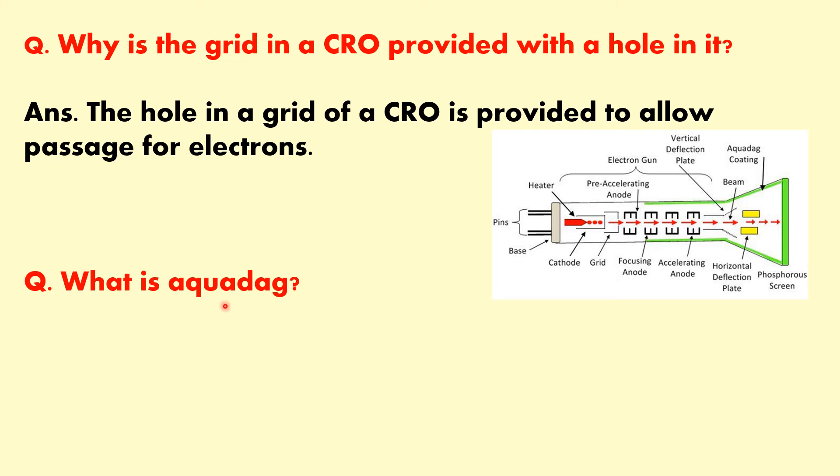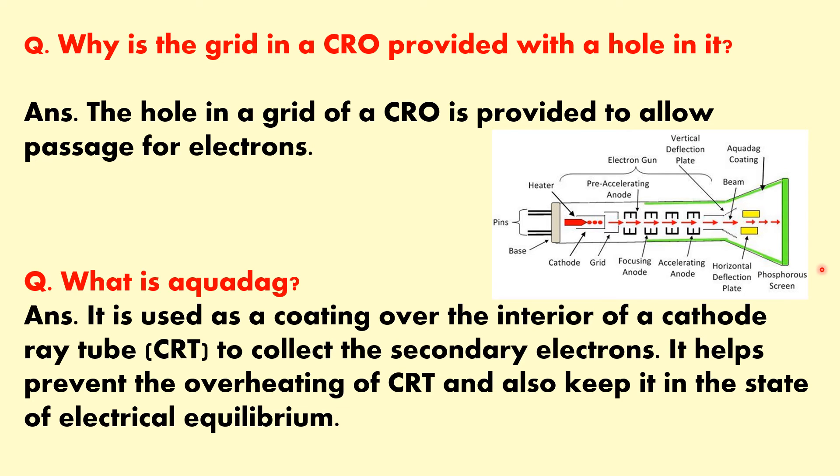What is Aquadag? It is used as a coating over the interior of a cathode tube to collect the secondary electrons. This layer or coating is known as Aquadag coating. And it helps to prevent the overheating of CRT also and it also keeps it in the state of electrical equilibrium.